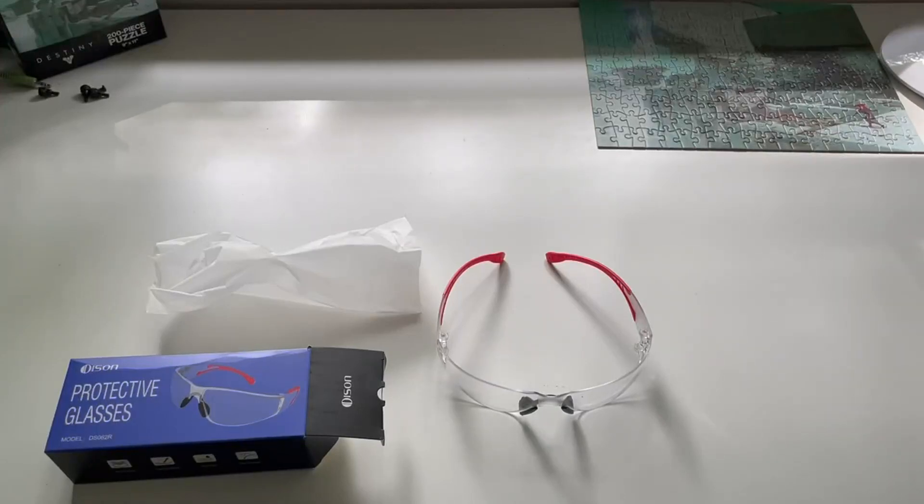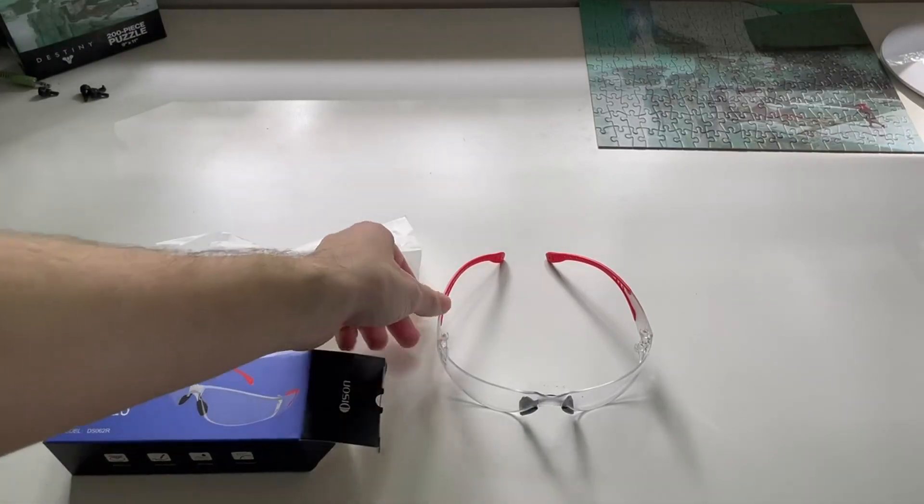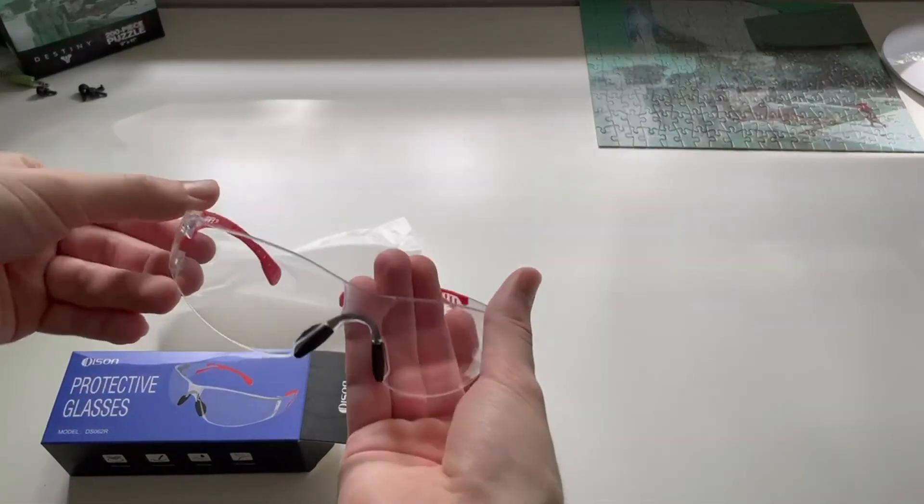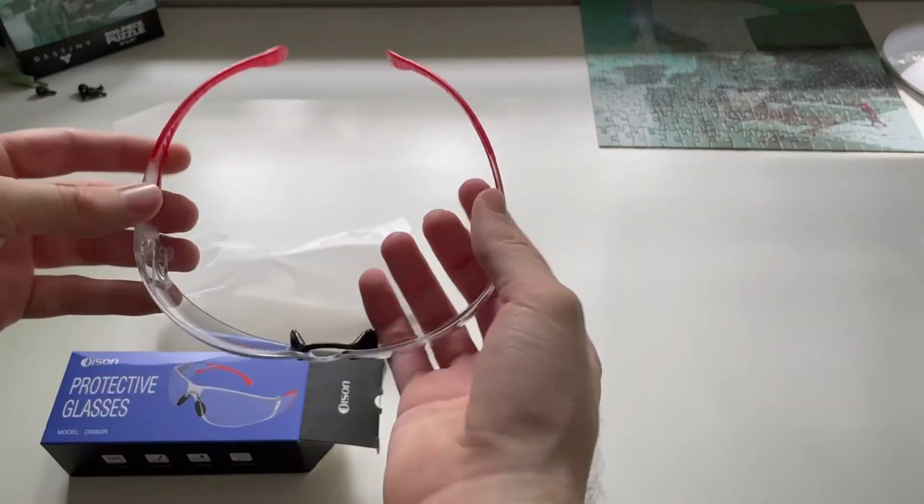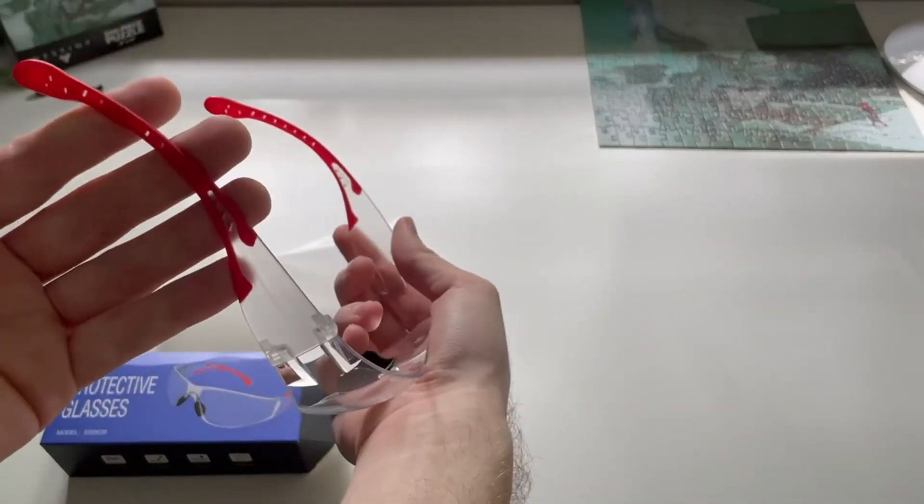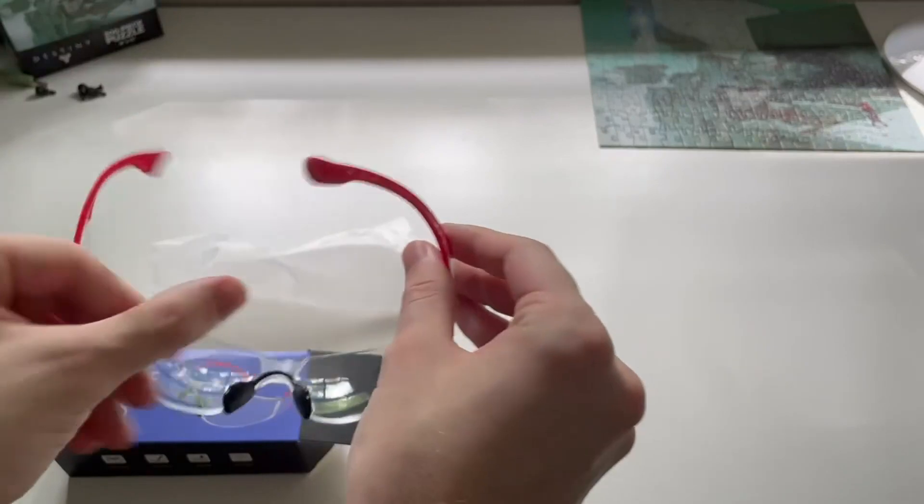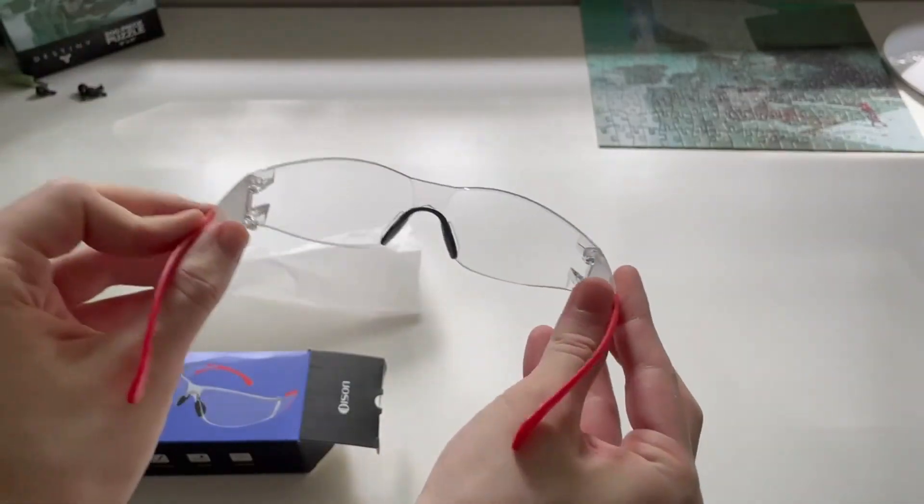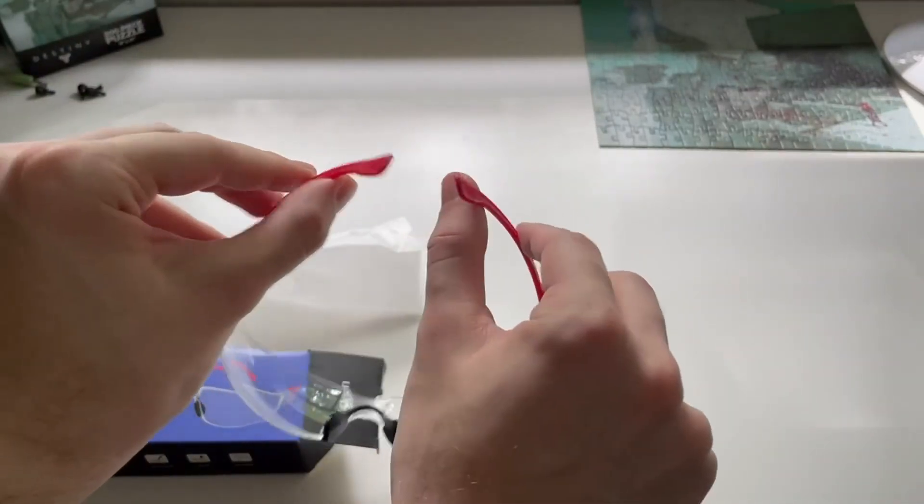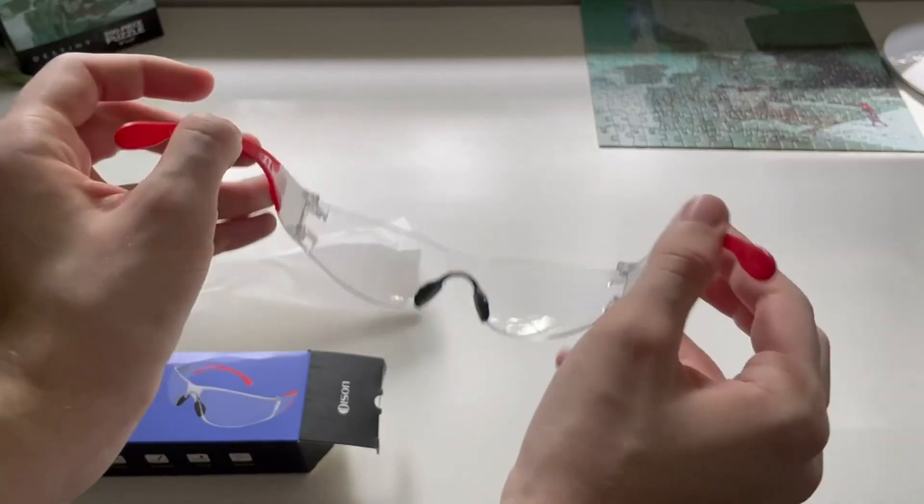Here are the Ocean protective glasses. They have these nice silicone spots. If you've ever used any workshop glasses before, they look very similar to that, but they have these little silicone parts which make